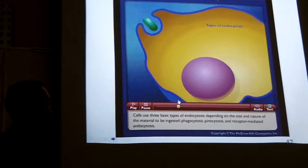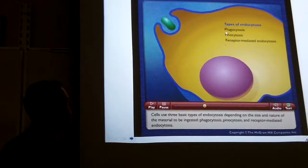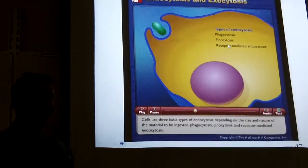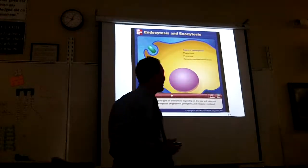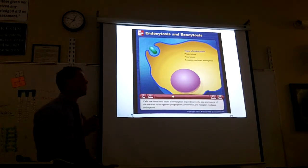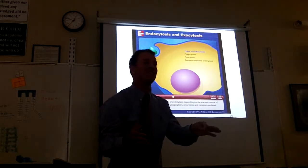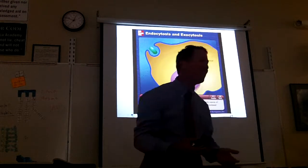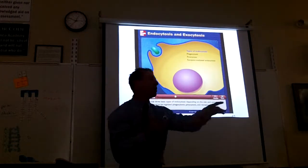Phagocytosis and pinocytosis — these are methods of bulk transport. That answers the earlier question about vesicles. The book talks about those, but section 5.4 is not on the test.